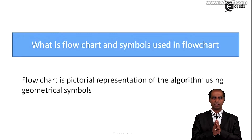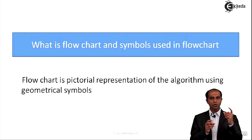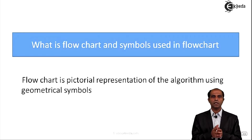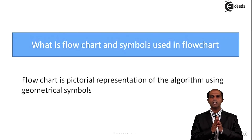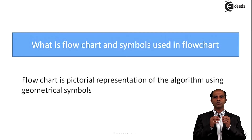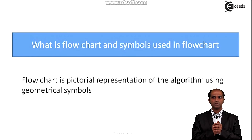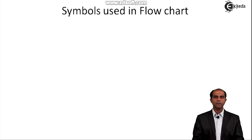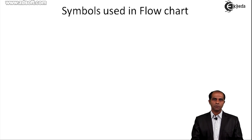The basic definition of a flowchart is the pictorial representation of an algorithm using geometrical symbols. When we use geometrical symbols to represent the steps of an algorithm, we call that a flowchart. These geometrical symbols include rectangles, parallelograms, circles, rhombuses, and rounded-edge rectangles. Let's see what these symbols mean and where exactly they are supposed to be used.